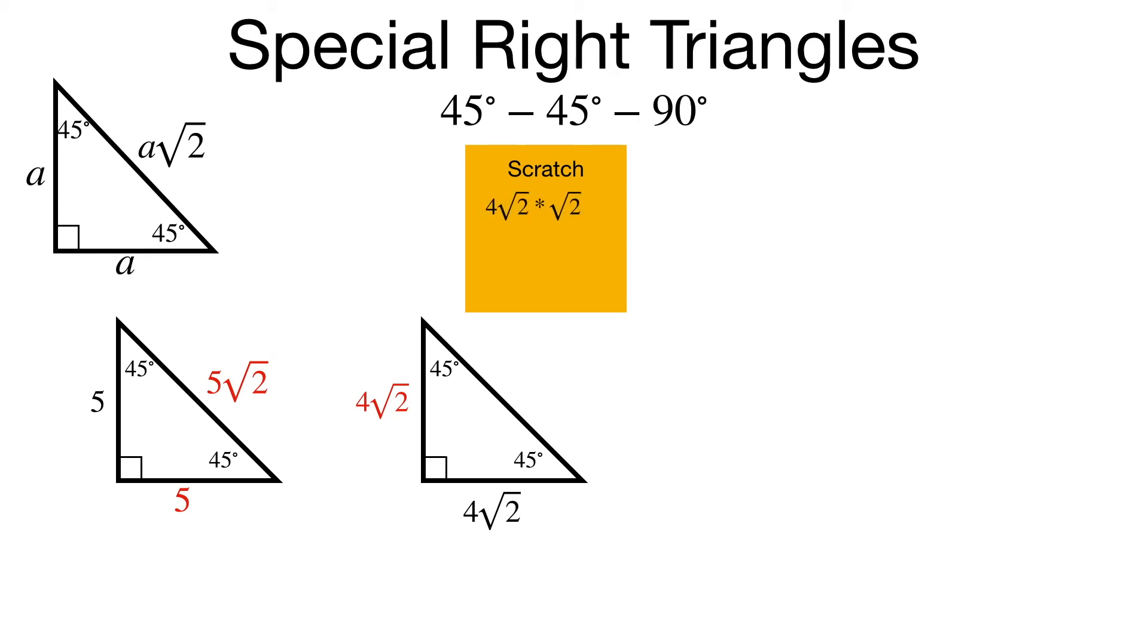So we take 4 square root of 2 times square root of 2, and square root of 2 times square root of 2 is just 2. So 4 times 2 is 8. So my hypotenuse is just 8.